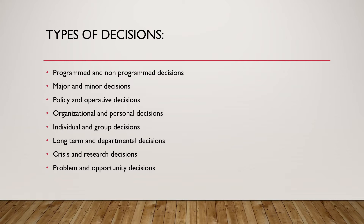Major and minor decisions: company major goals and objectives-related decisions are major decisions, while decisions regarding the purchase of stationery are a type of minor decision. Policy and operative decisions: policy decisions are to be carried forward in each and every situation. For example, if a policy states every employee can take two leaves per month, this is followed every time. Operative decisions relate to day-to-day business operations.